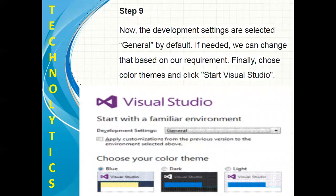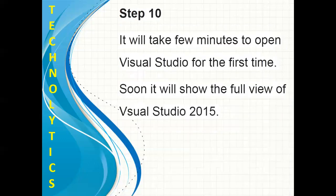Step 9. The development settings are selected as General by default. If needed, we can change that based on our requirement. Finally, choose your color theme and click Start Visual Studio. Step 10. It will take a few minutes to open Visual Studio for the first time. Soon it will show the full view of Visual Studio 2015 Community Edition, where you can run your C-Sharp and .NET practicals.